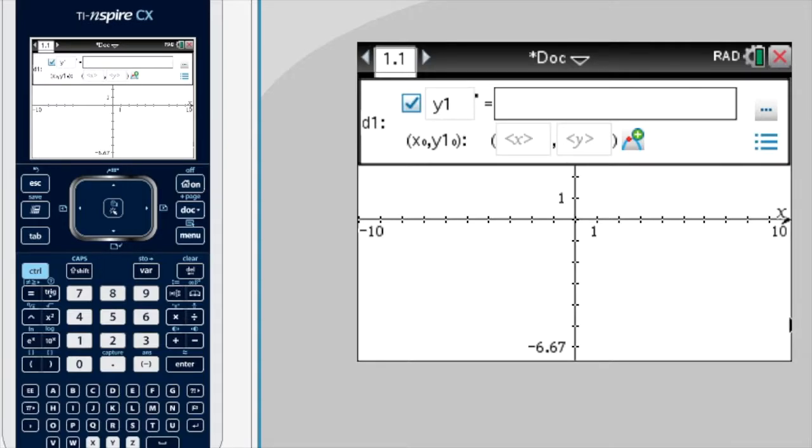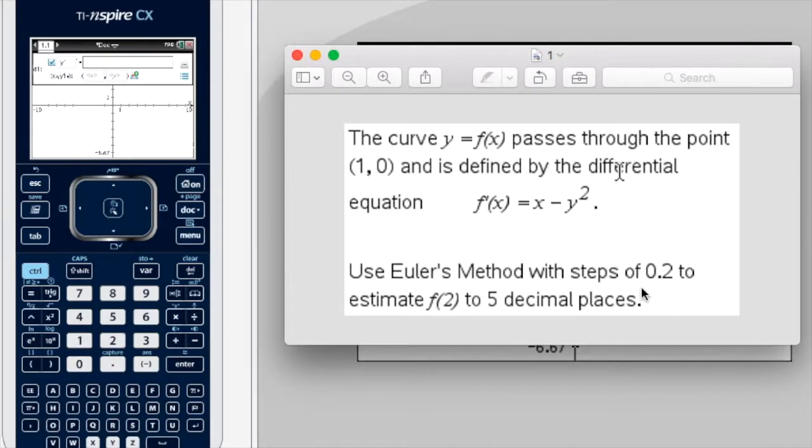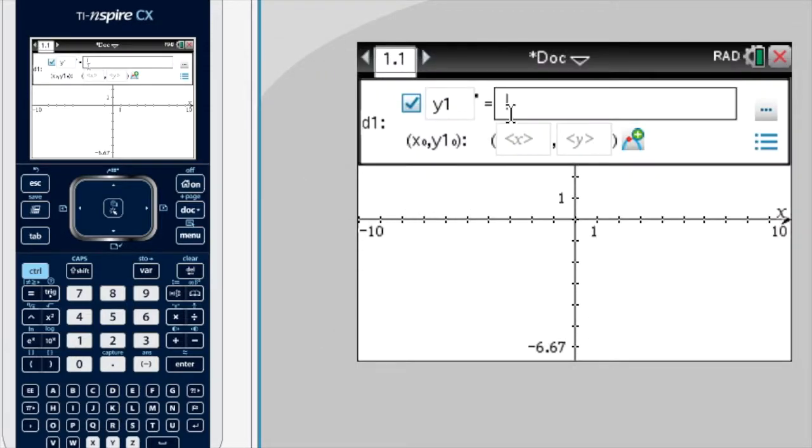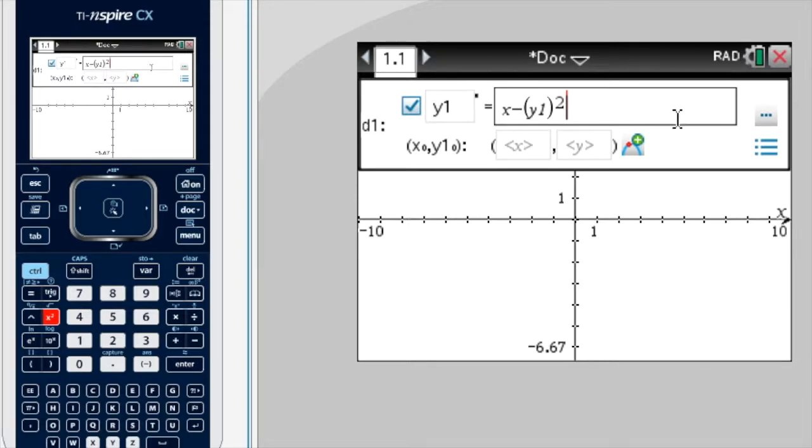Okay, so let's look back at our question. Our differential equation is x minus y squared. So we just type that in here: x minus, now we have to use y1, so I'm going to use brackets, bracket y1 squared.